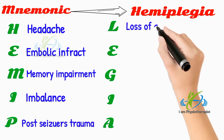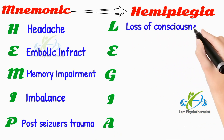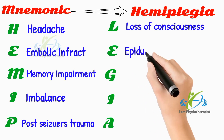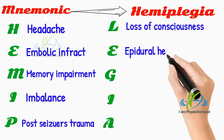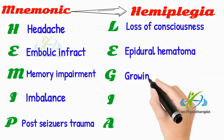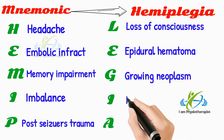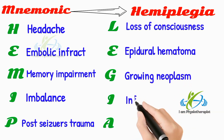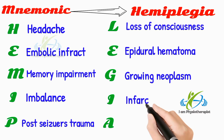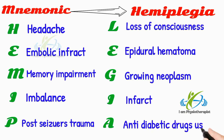L stands for loss of consciousness. A stands for epidural hematoma. G stands for growing neoplasm. I stands for infarct, mostly cerebral. A stands for anti-diabetic drugs like insulin usage.